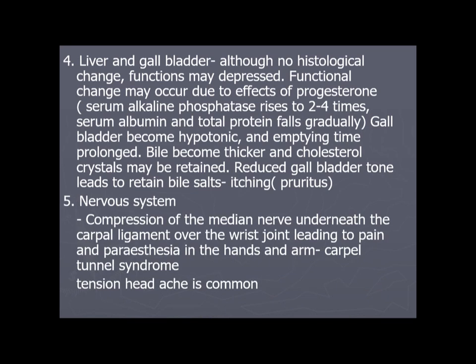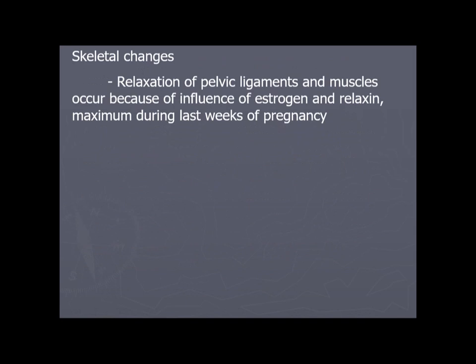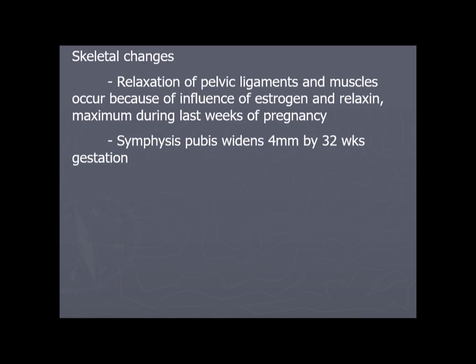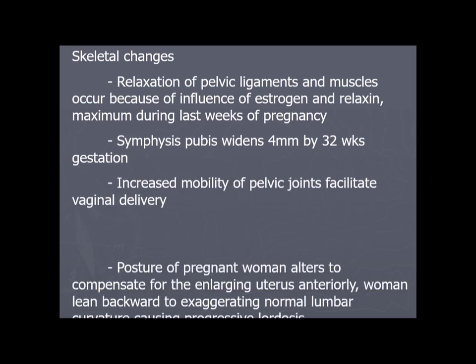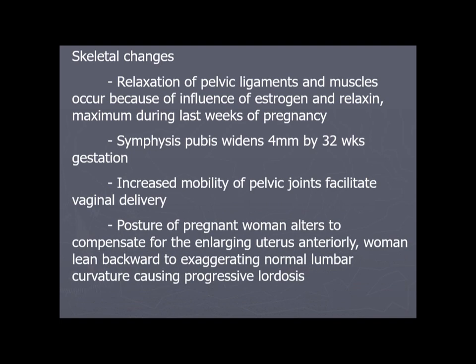Nervous system: compression of the median nerve underneath the carpal ligament over the wrist joint leads to pain and paresthesia in the hands and arms — known as carpal tunnel syndrome. Tension headache is also common during pregnancy. Skeletal changes: relaxation of pelvic ligaments and muscles occurs due to estrogen and relaxin, maximum during the last weeks. The symphysis pubis widens by 4 mm by 32 weeks, increasing mobility of pelvic joints to facilitate vaginal delivery. The pregnant woman's posture alters, leading backward to exaggerate lumbar curvature, causing progressive lordosis.